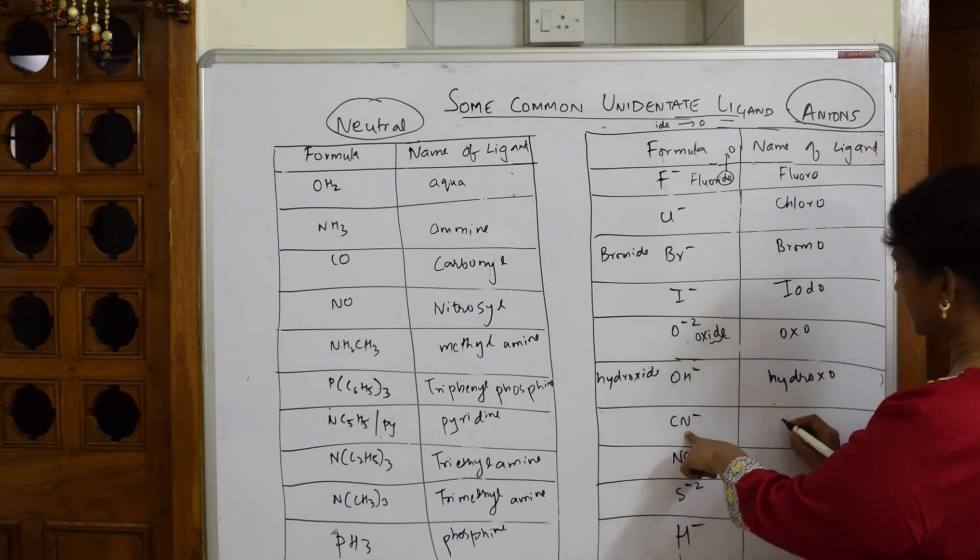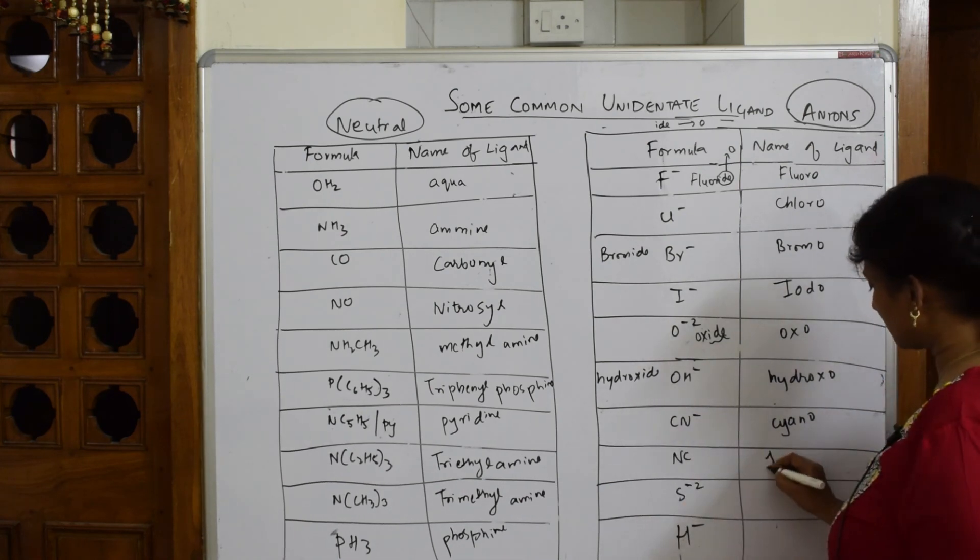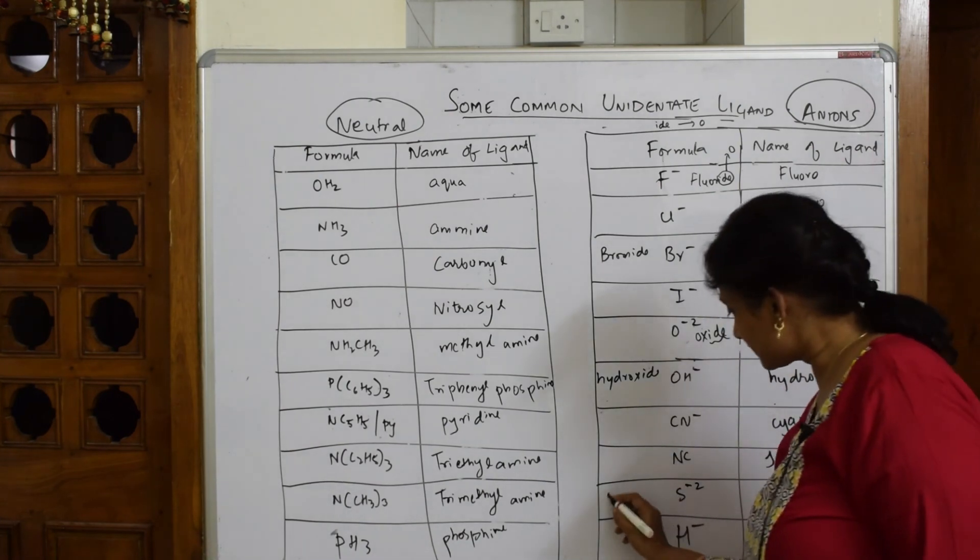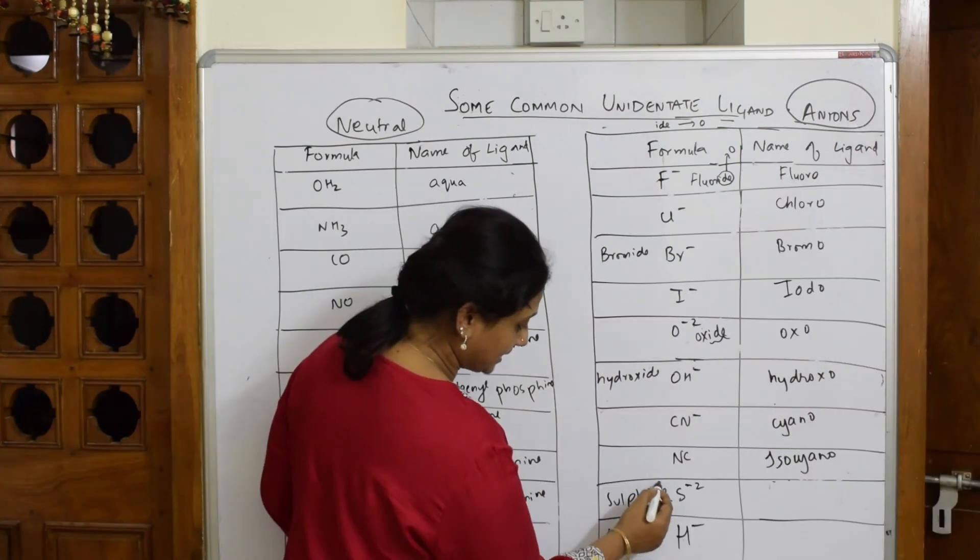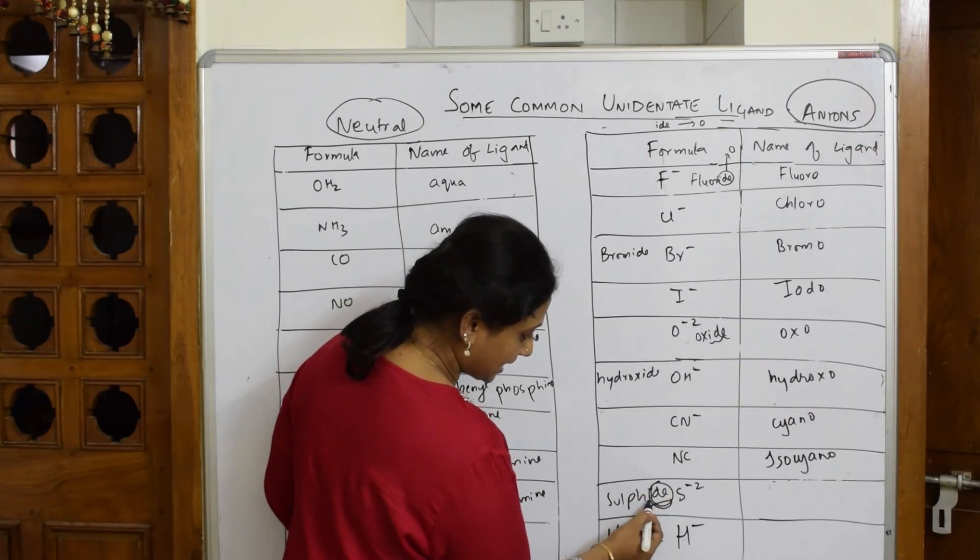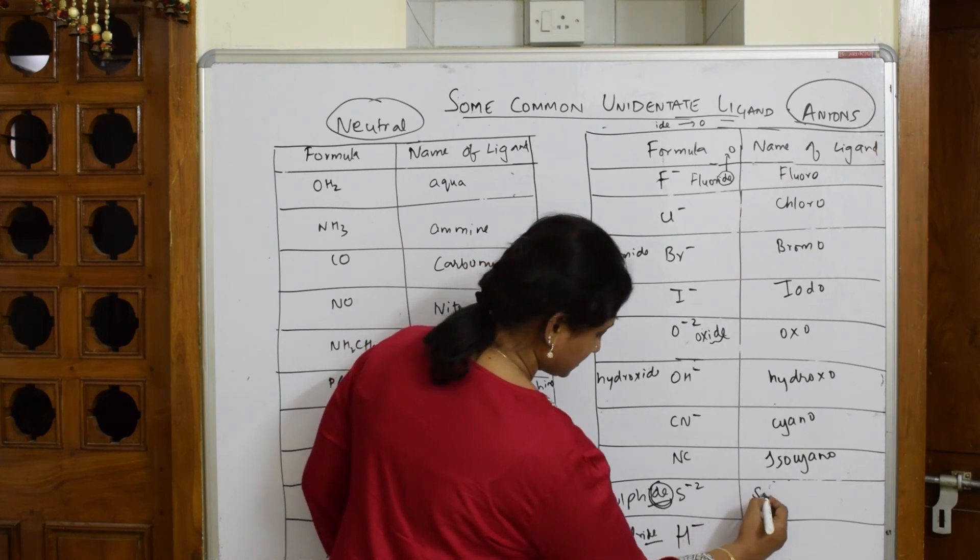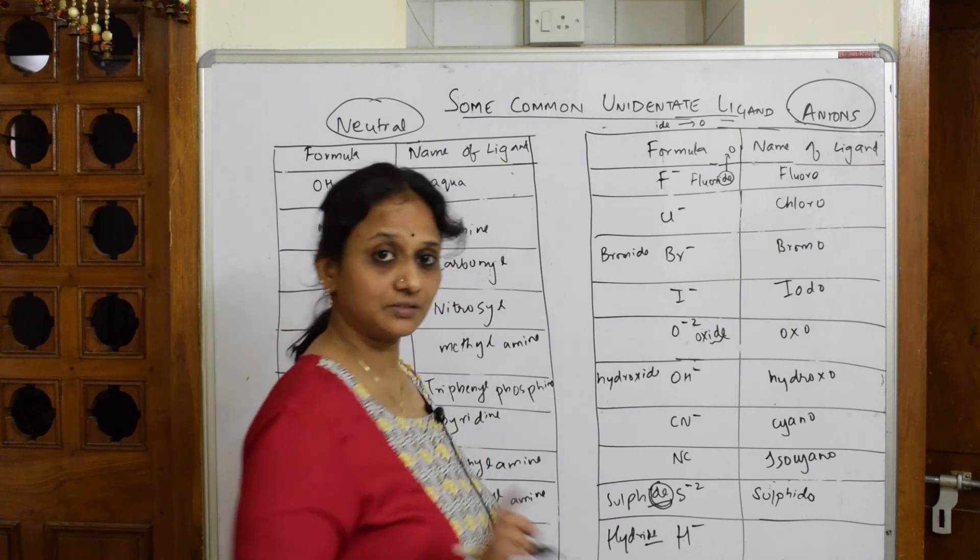This is cyanide—this becomes cyano. Isocyanide—this becomes isocyano. This is sulfide. S-U-L-P-H-I-D-E sulfide—take out -ide and add -o here. So this becomes sulfido.